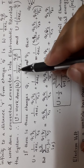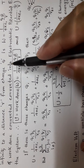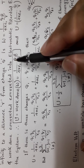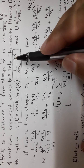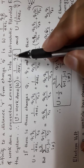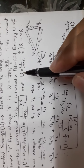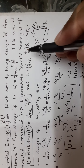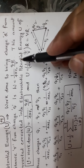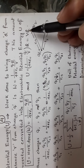The formula for electrostatic potential energy is U equal to 1 by 4 pi epsilon 0, divided by distance r, into q. We write U equal to potential V into q.